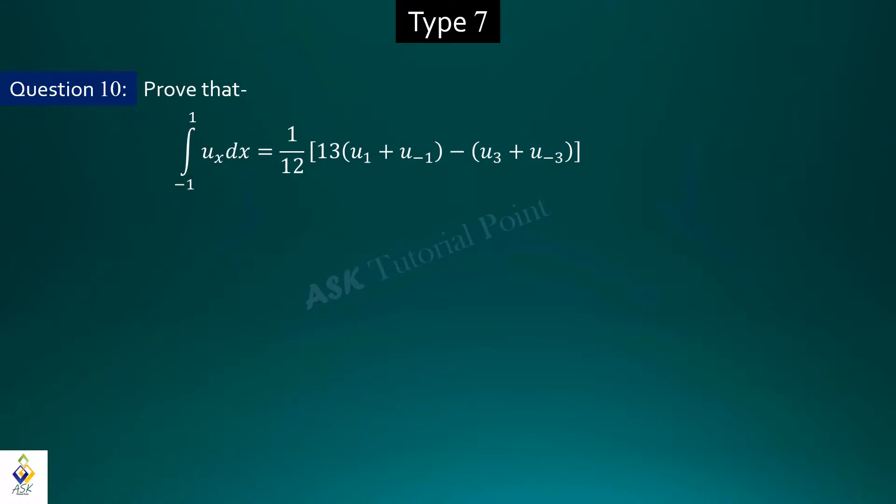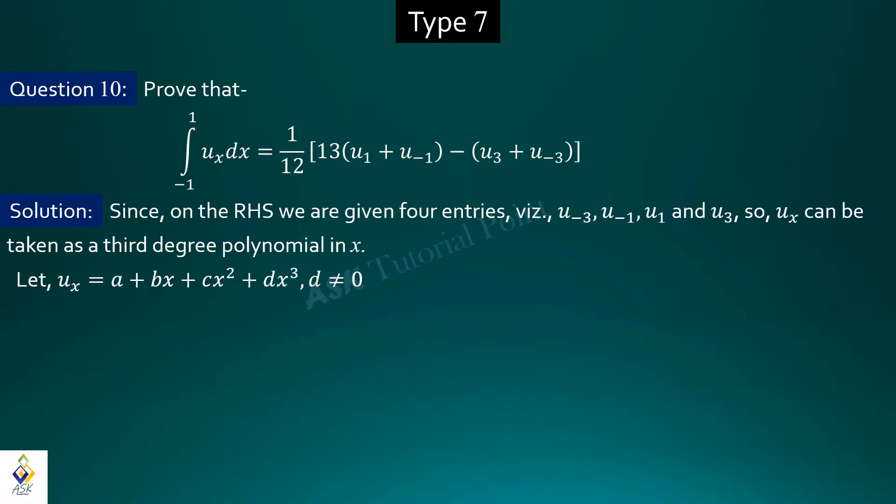Then according to fundamental theorem of finite difference, we can say that 3rd difference of a 3rd degree polynomial is constant. And hence, we can assume that the function ux be a 3rd degree polynomial in x. So we place this 3rd degree polynomial in the left hand side and integrate with respect to x over the range minus 1 to plus 1.